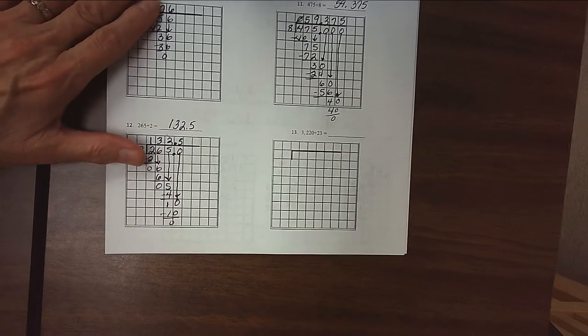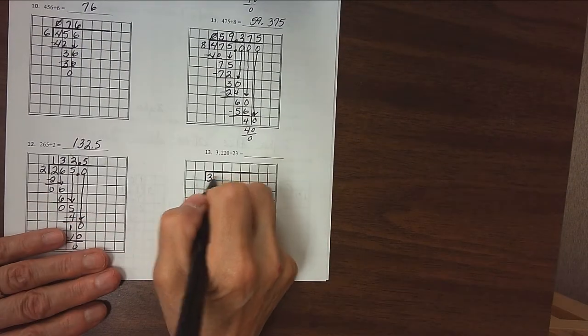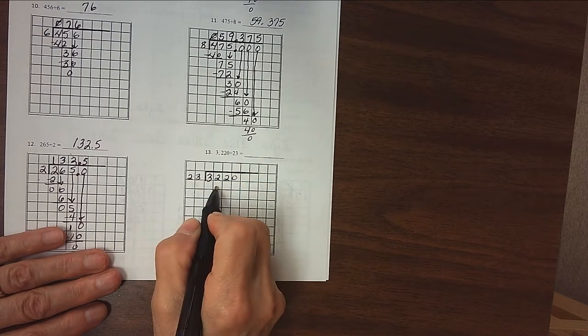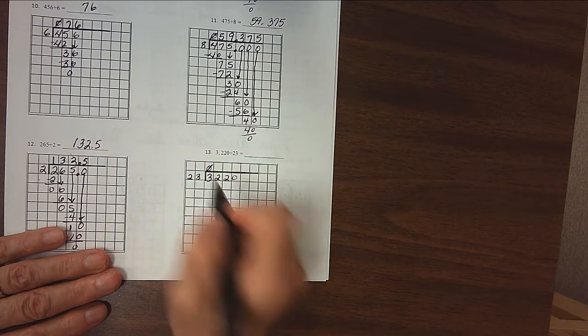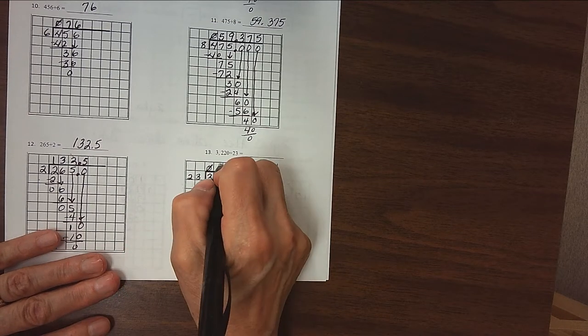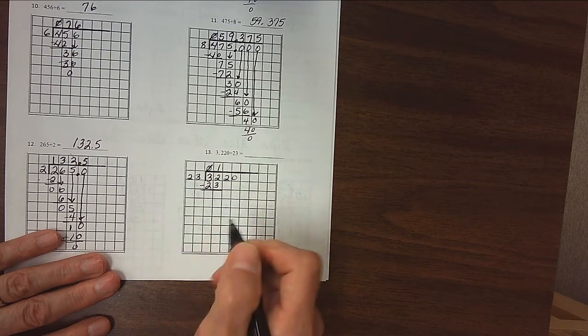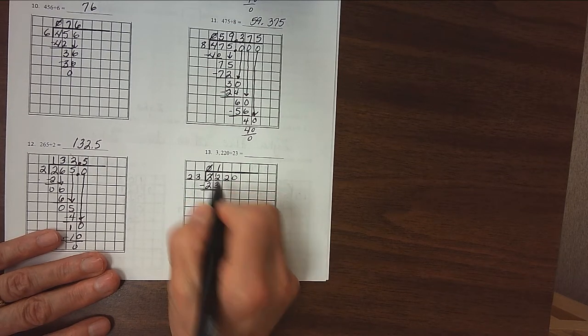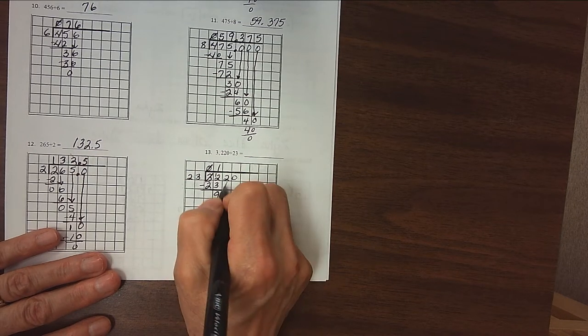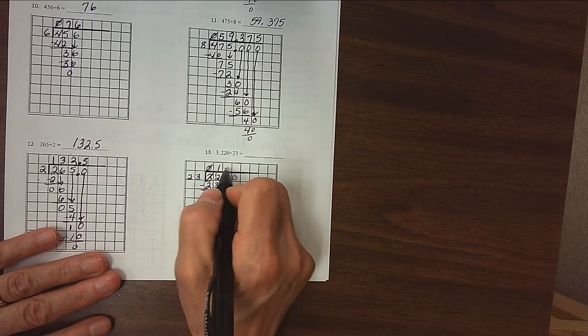All right, last one on the page. 3,220 divided by 23. So 3,220 divided by 23. 23 will not divide into 3, you can mark that with a 0 if you want to. It divides into 32 once. 1 times 23 is 23. Subtract, we have to borrow, make that a 12. 3 from 12 is 9. Bring down my 2.